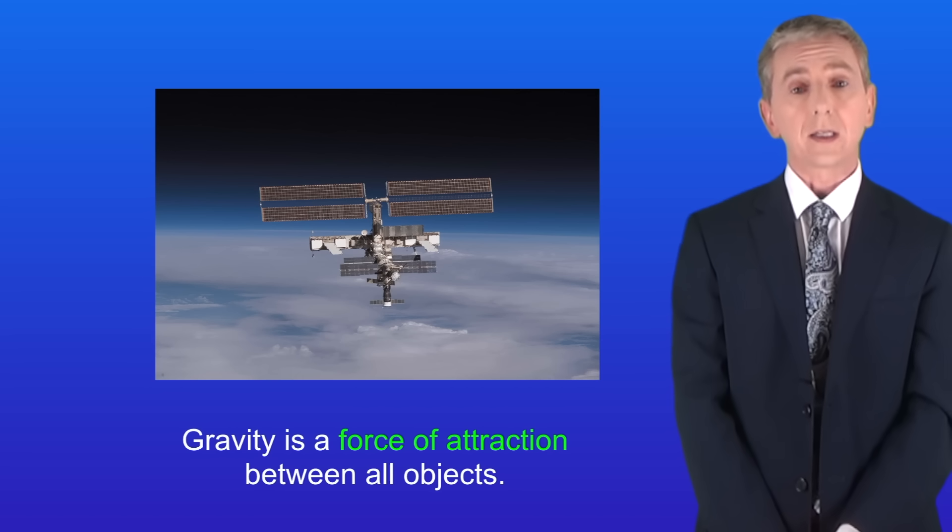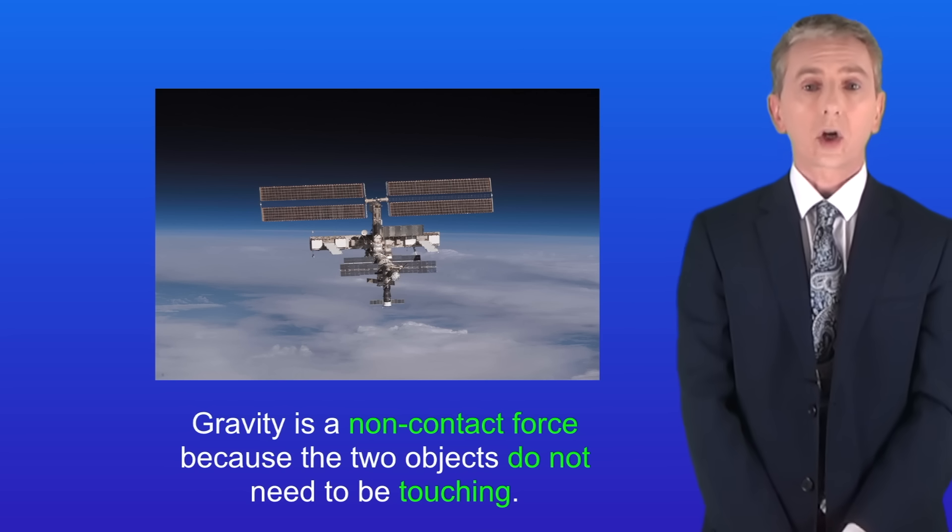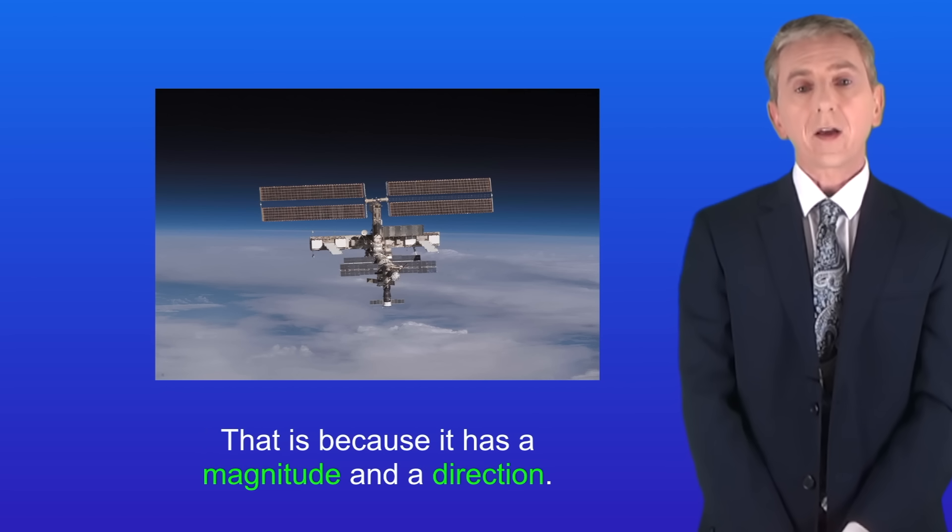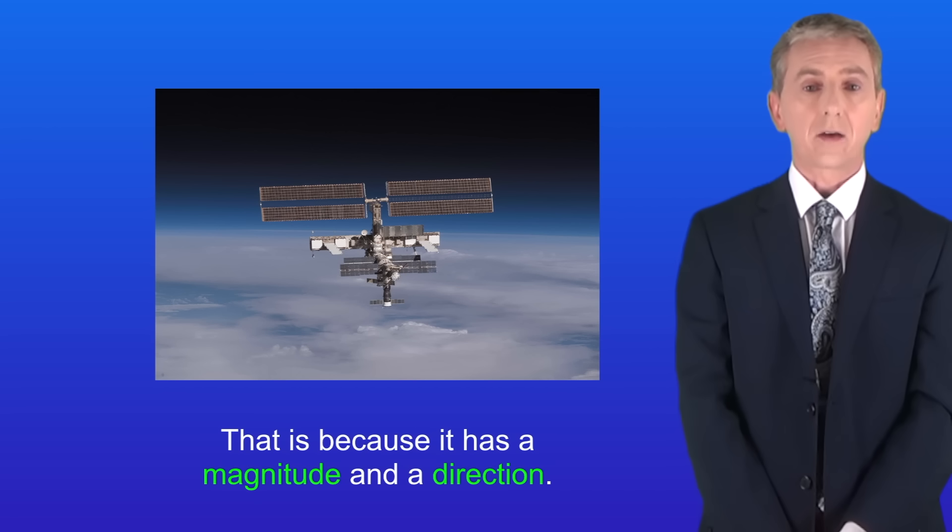In the last video we saw that gravity is a force of attraction between all objects. Gravity is a non-contact force because the two objects do not need to be touching. Like all forces, gravity is a vector quantity. That's because it's got a magnitude and a direction.